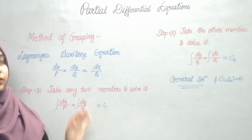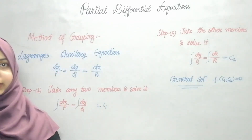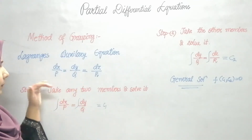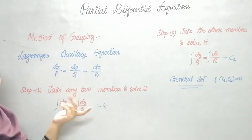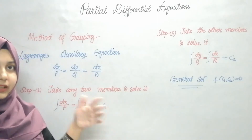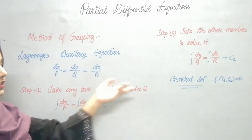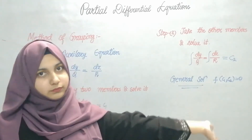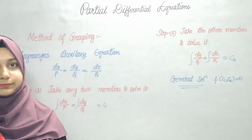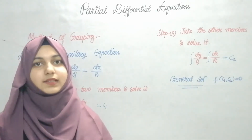That's my solution to the given PDE. It is very simple: convert to the auxiliary form, pick any two terms and integrate to get C1, then take the remaining two and integrate to get C2, put them in the general solution form, and you have your answer. We will see one or two problems so that it will be clear.